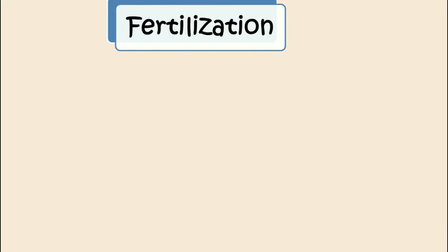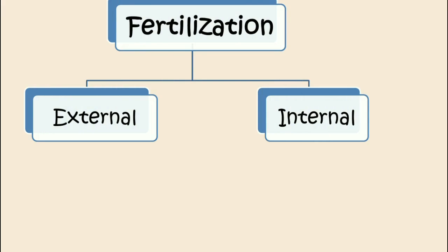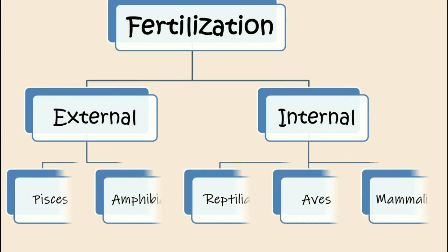Fertilization in animals consists of two types: external and internal. External fertilization happens in pisces and amphibia, while internal fertilization happens in reptilia, aves, and mammalia.